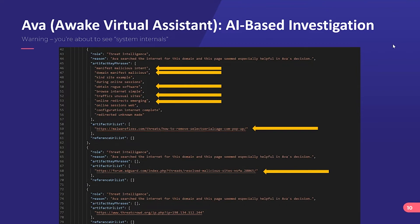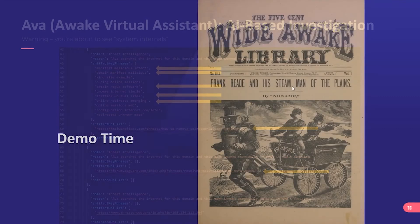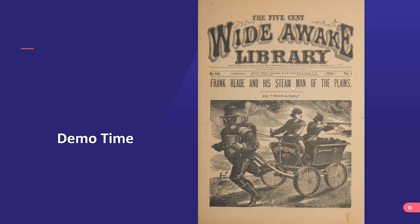AVA not only looks at the search summaries — it goes to those pages and reads the content, trying to understand what pages discussing this artifact are actually saying about it. What this shows is that the artifact was found on the internet, and through topic modeling and other techniques AVA determined this is probably bad — even though AVA wasn't configured to look at sites like malwarefixes.com. AVA found it in the search and concluded this domain is suspicious or bad.